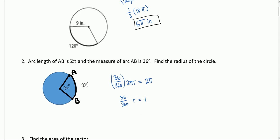If I reduce that fraction, I get 1 over 10. R equals 1, then multiply both sides by 10, and you get r is 10. It doesn't give us units, so I'm going to say 10 units.